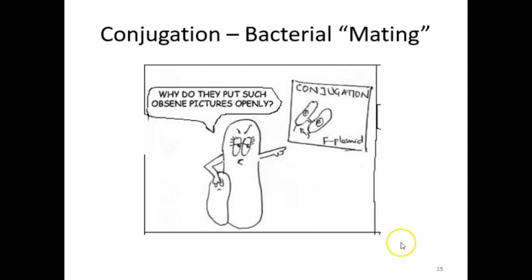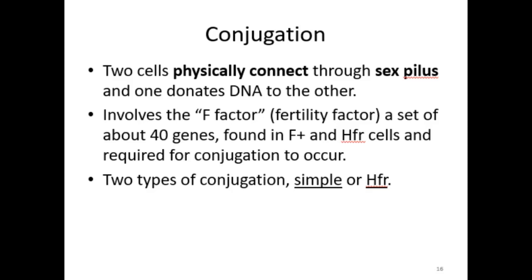Here's a silly nerdy science cartoon about conjugation, which is often referred to as bacterial mating because it requires cell-cell connection, unlike the other two forms of horizontal gene transfer. Conjugation is when two cells physically connect through a sex pilus, and one donates DNA to the other. It involves something called the F-factor, or fertility factor, which is a set of about 40 genes. The F-factor is found in F-plus and HFR cells, and it's required for conjugation to occur. There are two types of conjugation: simple conjugation and HFR conjugation.